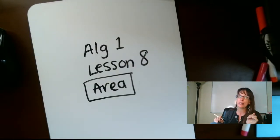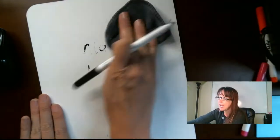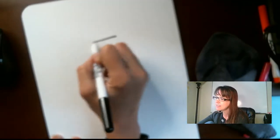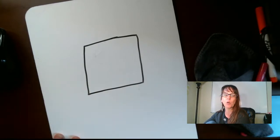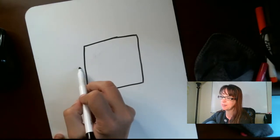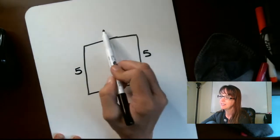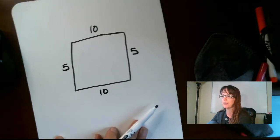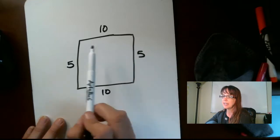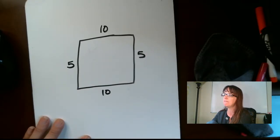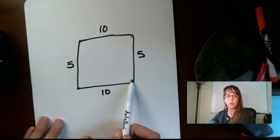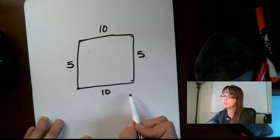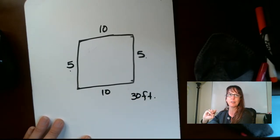Just a quick recap on one of my previous videos: finding the perimeter. As a reminder, if I have this garden — let's say the sides are 5, 5, 10, and 10 — to find the perimeter, that would be the equivalent of finding the fence. You'd go to the hardware store and ask for 10 plus 10, which is 20, plus 5, 25, 30. You're going to need 30 feet of fencing.